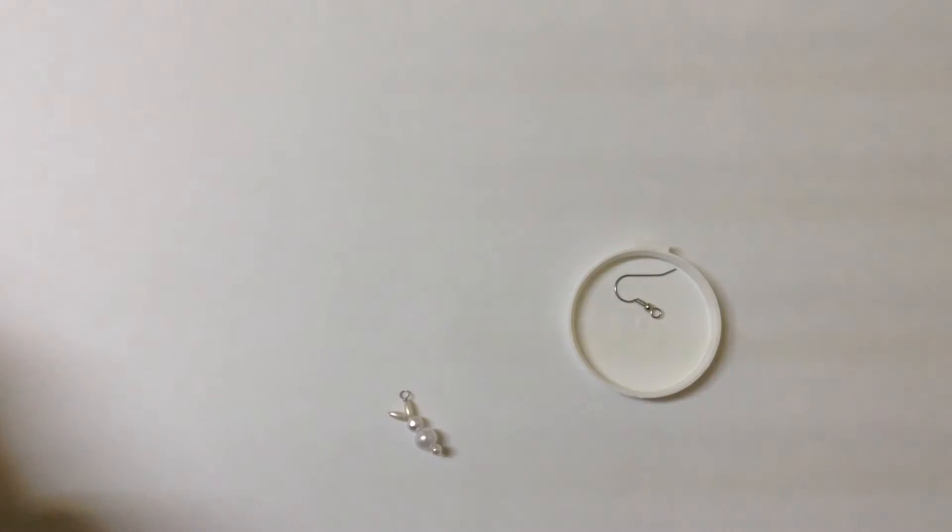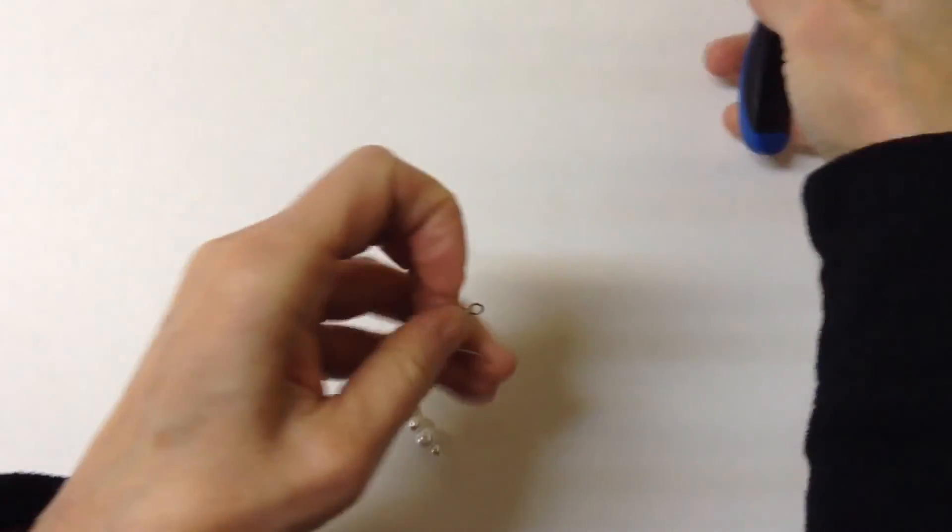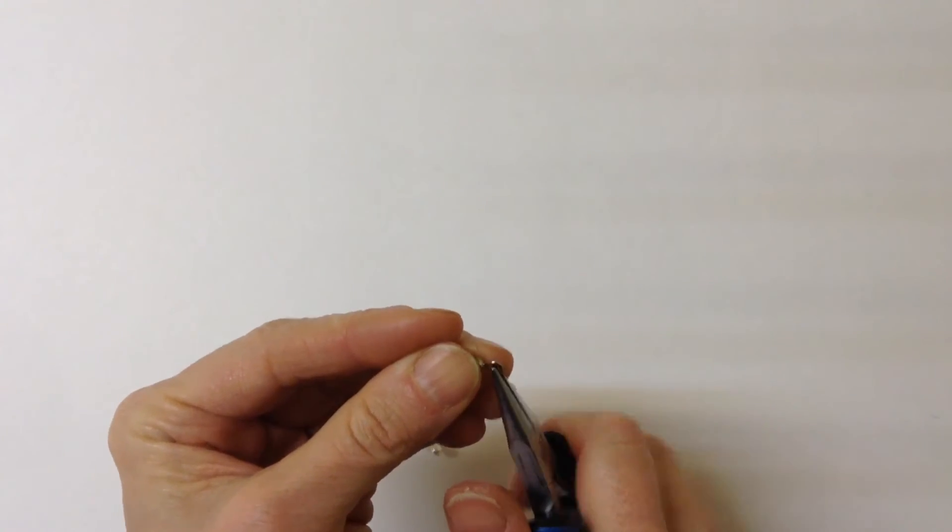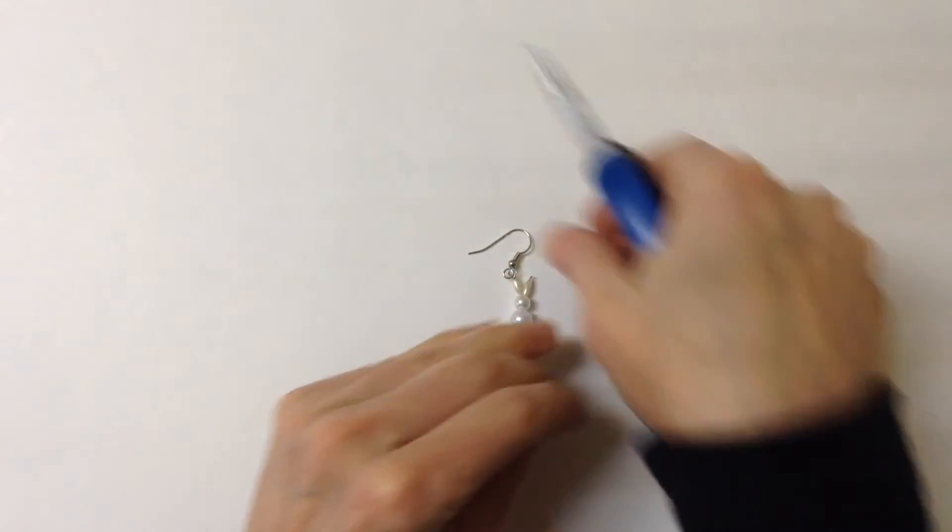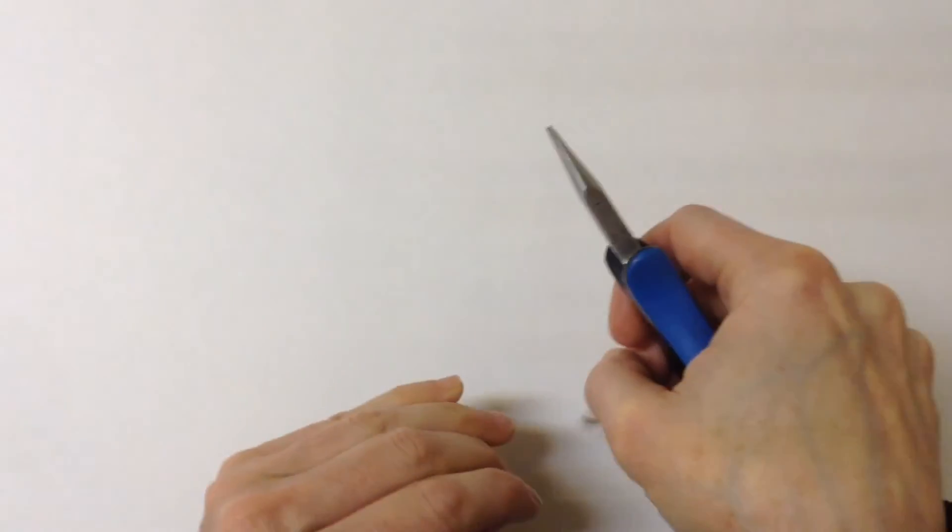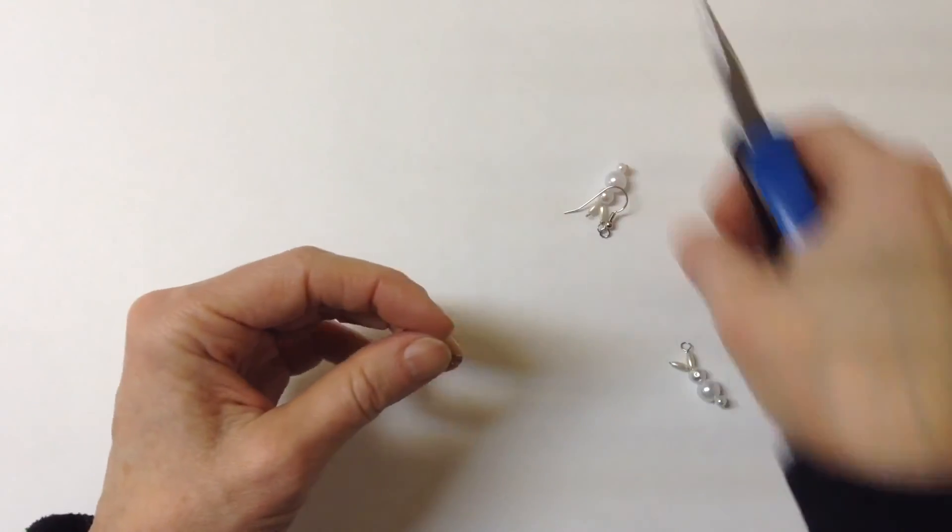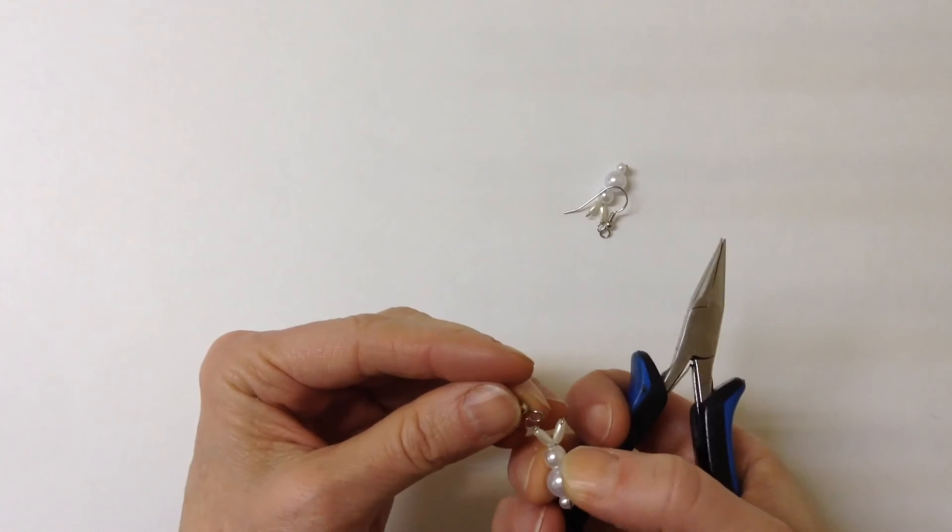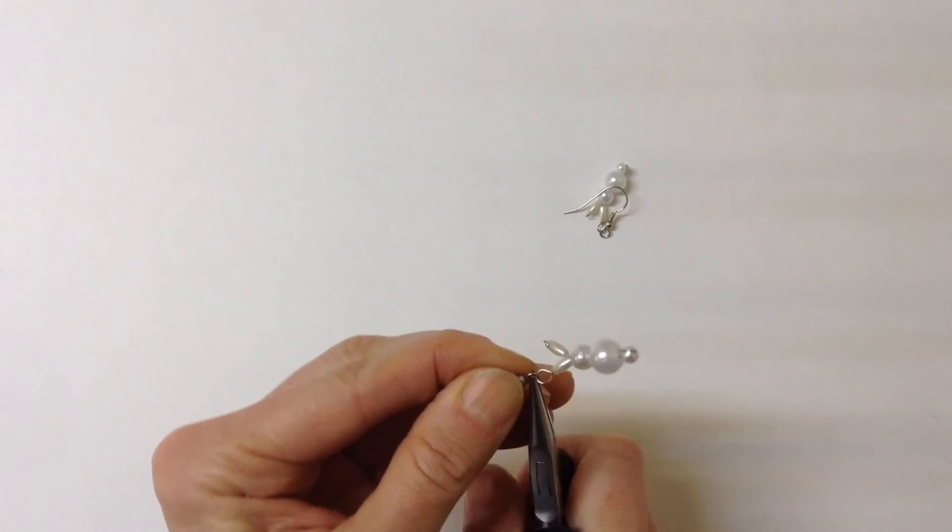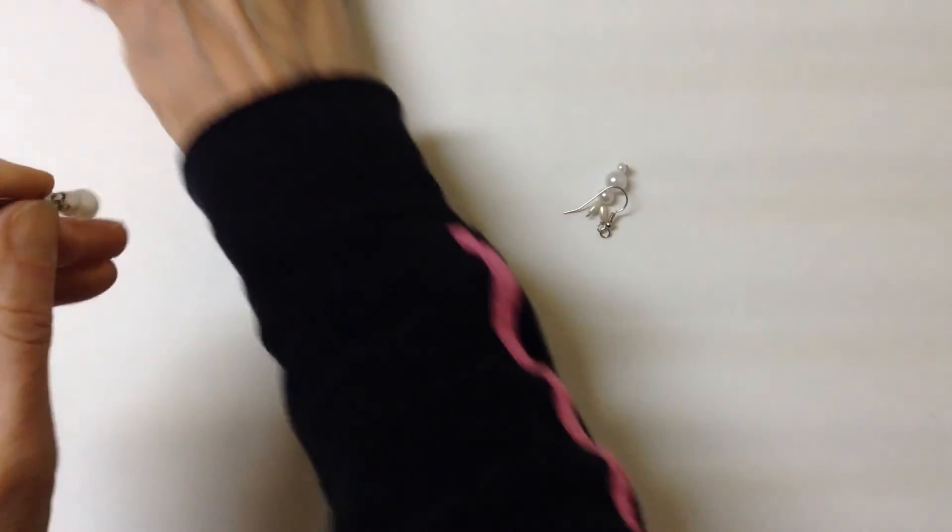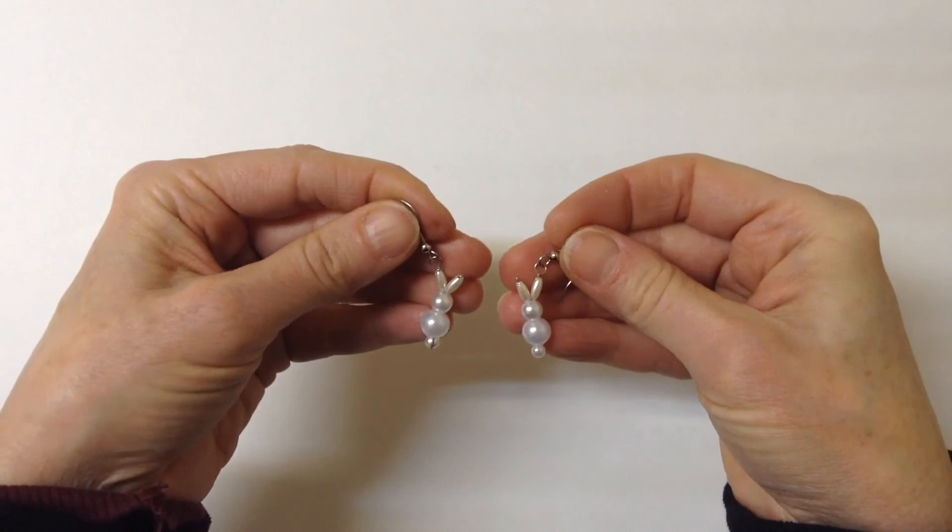And then you're going to get your flat pliers and add your hook. Just open up the hook and you want it to be sort of on the opposite side of this bunny so if this one's on the right ear we'll put this one on the left. And then you're going to put it on the left ear like that. Close it up and there you have your little bunny earrings.